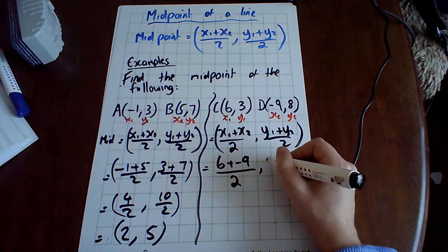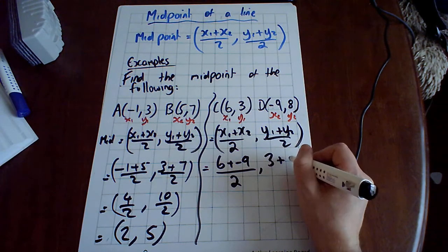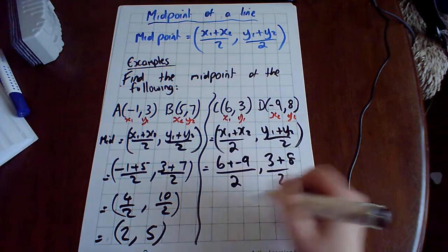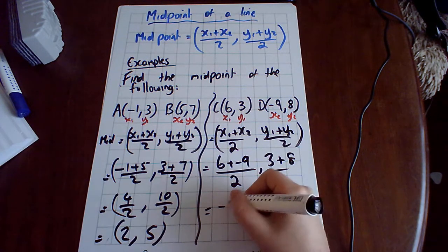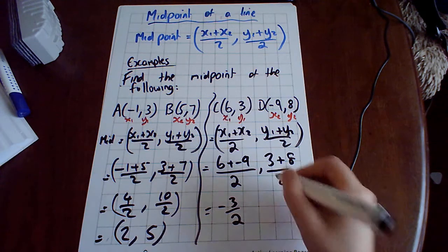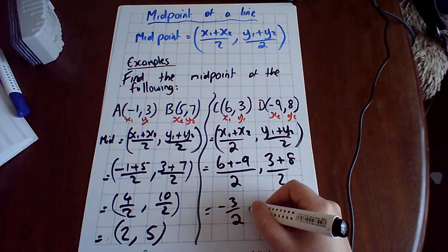In this case, x1 is 6 plus minus 9, all over 2. And then we have y1 is 3 plus y2 is 8 over 2. So in this case, 6 take away 9 is minus 3 over 2, and 3 plus 8 is 11 over 2.